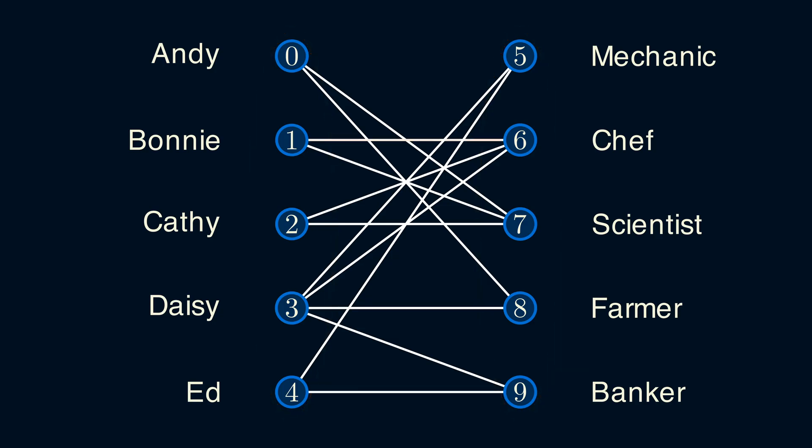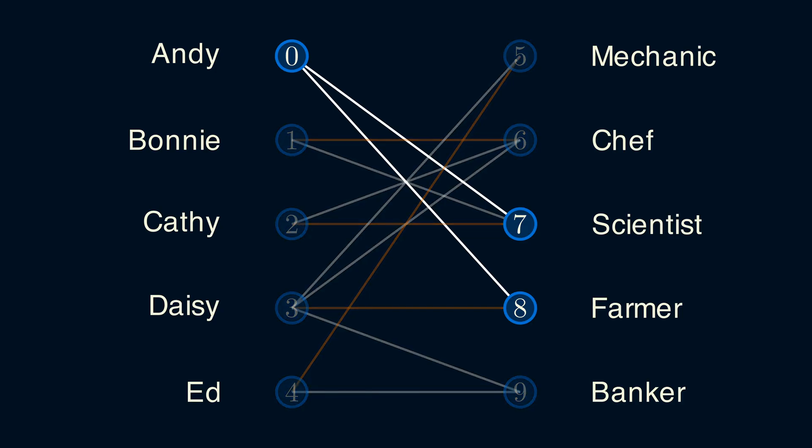Let's go back to the bad matching we had before where only Bonnie had a job. This matching is obviously bad because we could have easily given other people jobs, like we could have made Daisy a farmer. There are other edges we can add to our matching, like make Cathy a scientist and Ed a mechanic. But if we do this, Andy's only options are scientist or farmer. However, they're already assigned to Cathy and Daisy, so Andy can't be matched.